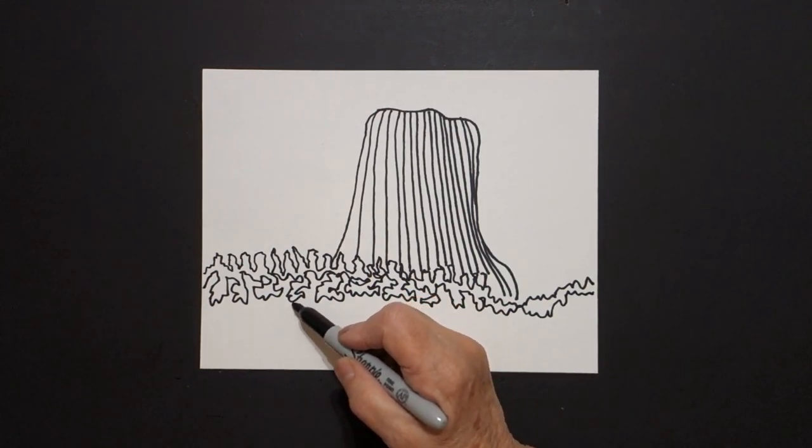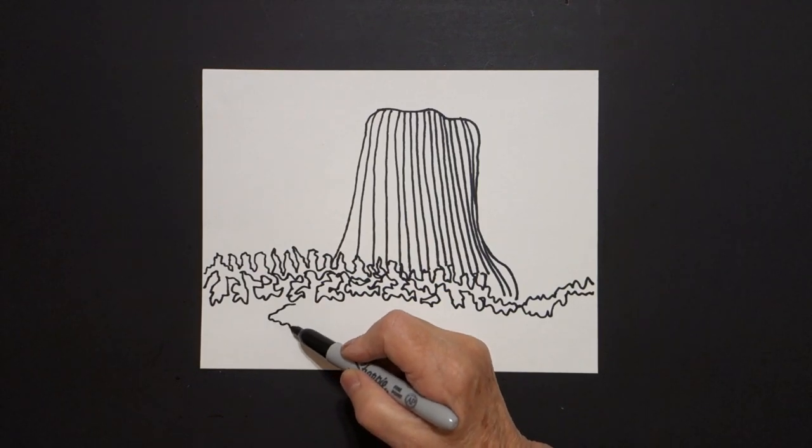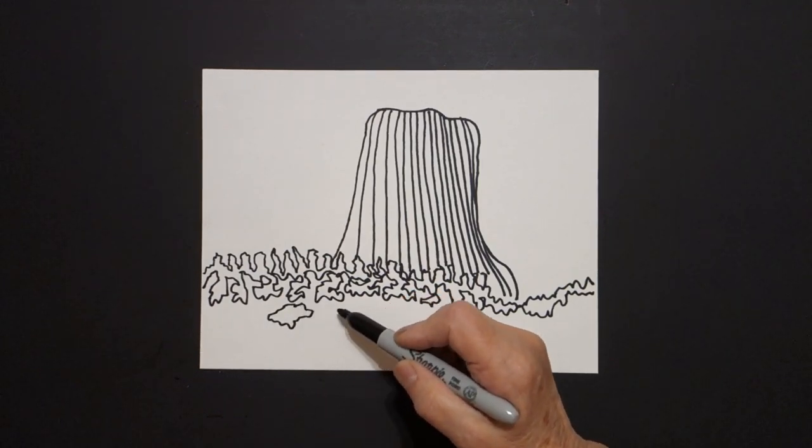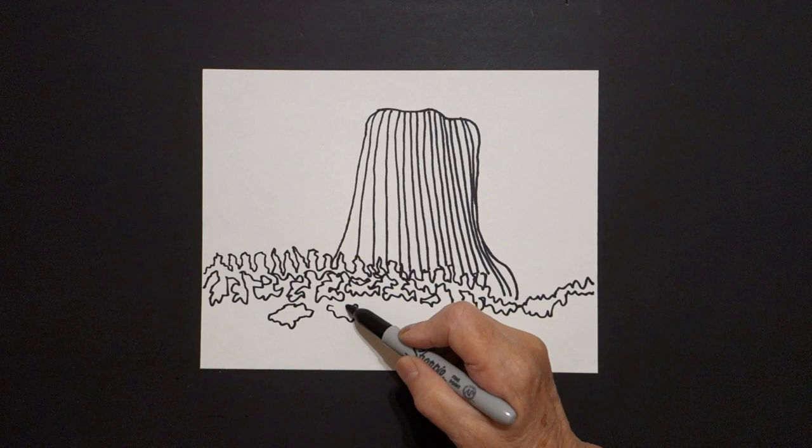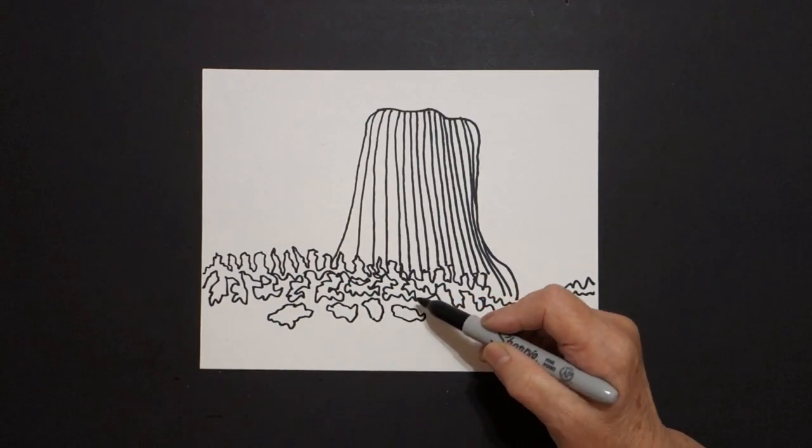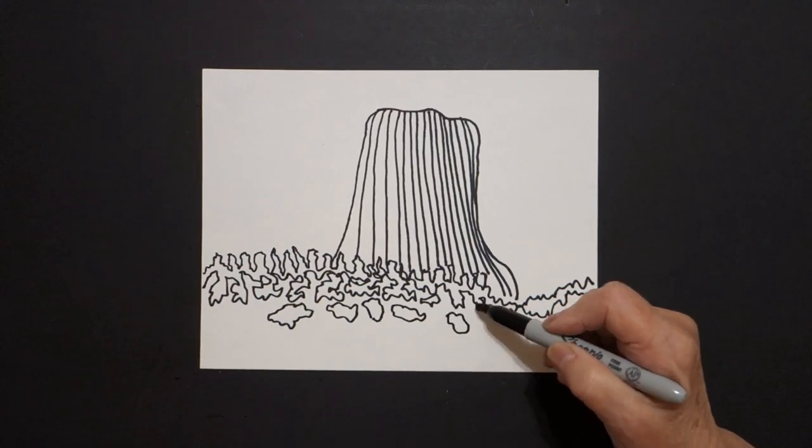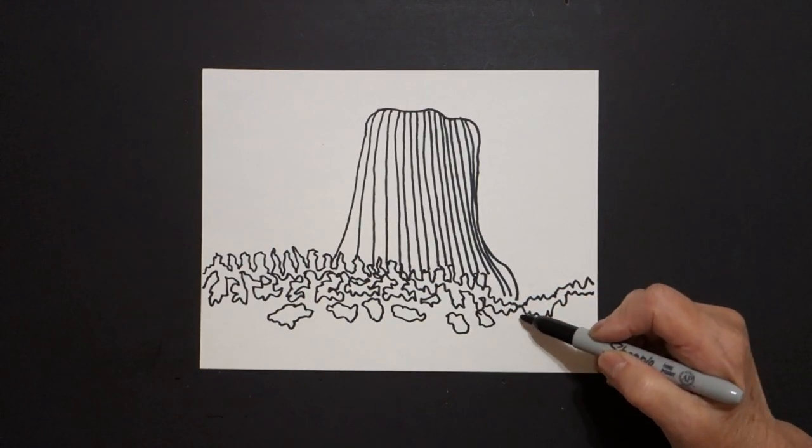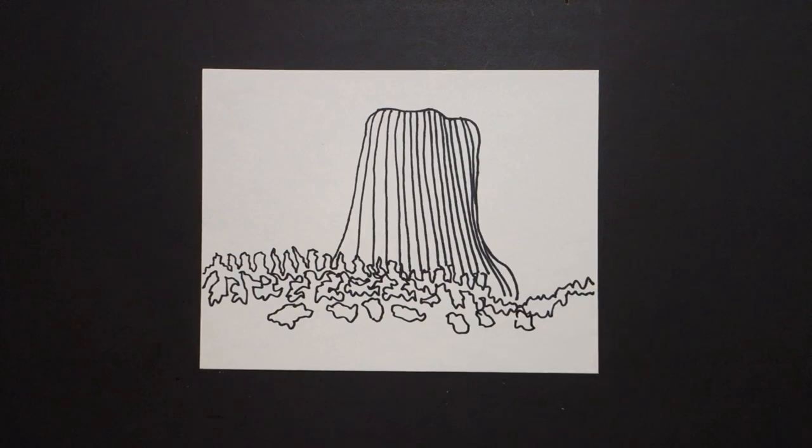we're going to do some individual. So I'm just going to draw some wavy lines, connect, move over, wavy line, connect, wavy line, up, over, down, up and connect. Okay.